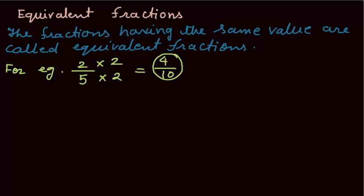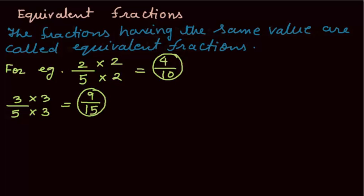Let me take another example: 3 over 5. Suppose we will multiply the numerator and denominator by 3. So, we will get a new fraction as 9 over 15. So, 9 over 15 is an equivalent fraction of 3 over 5.